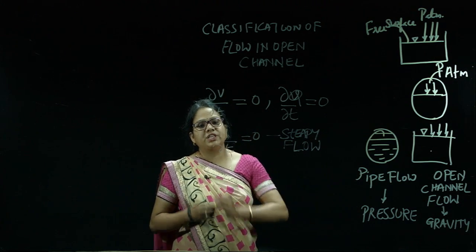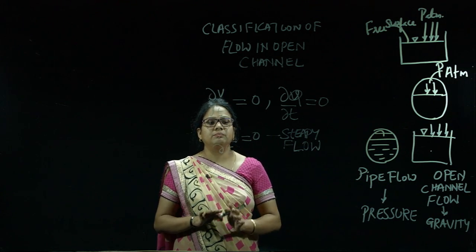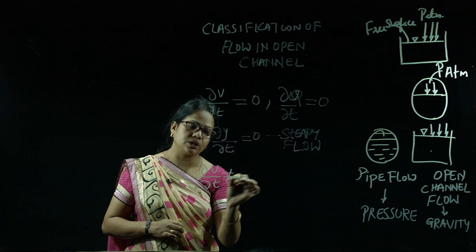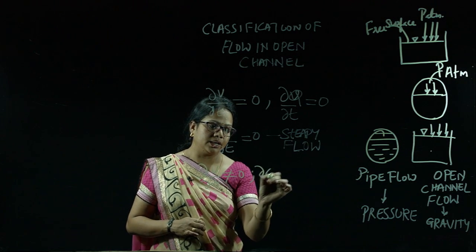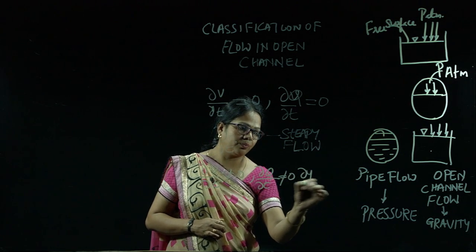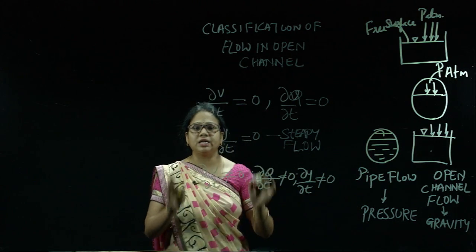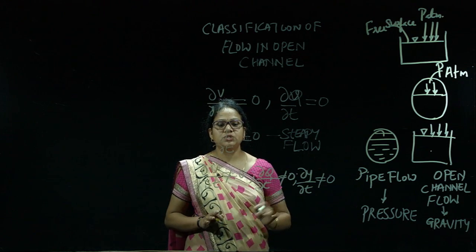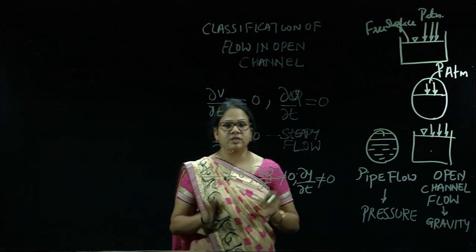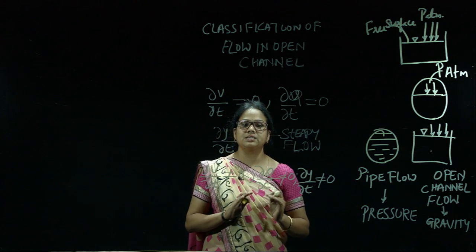What is unsteady flow? If these values — ∂v/∂t, ∂Q/∂t, and ∂y/∂t — change with time, then that is unsteady flow. If the flow characteristics at any point during the flow change with time, then that is unsteady flow; if they do not change with time, then that is steady flow.